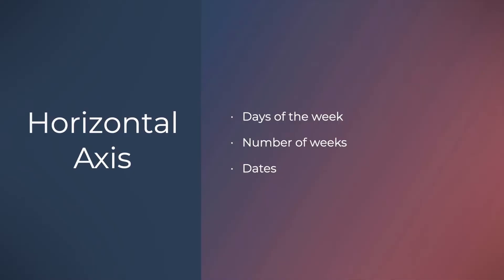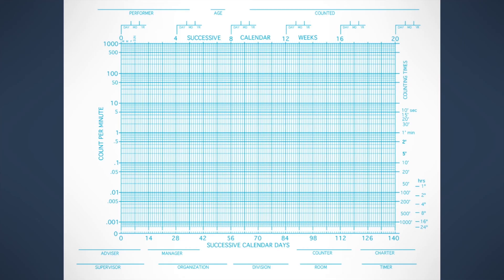Let me get you started with the horizontal axis where you can read days of the week, understand number of weeks, and look at dates. Here's a standard acceleration chart. This is a daily per minute SCC, the most common version of the chart being used in precision teaching.